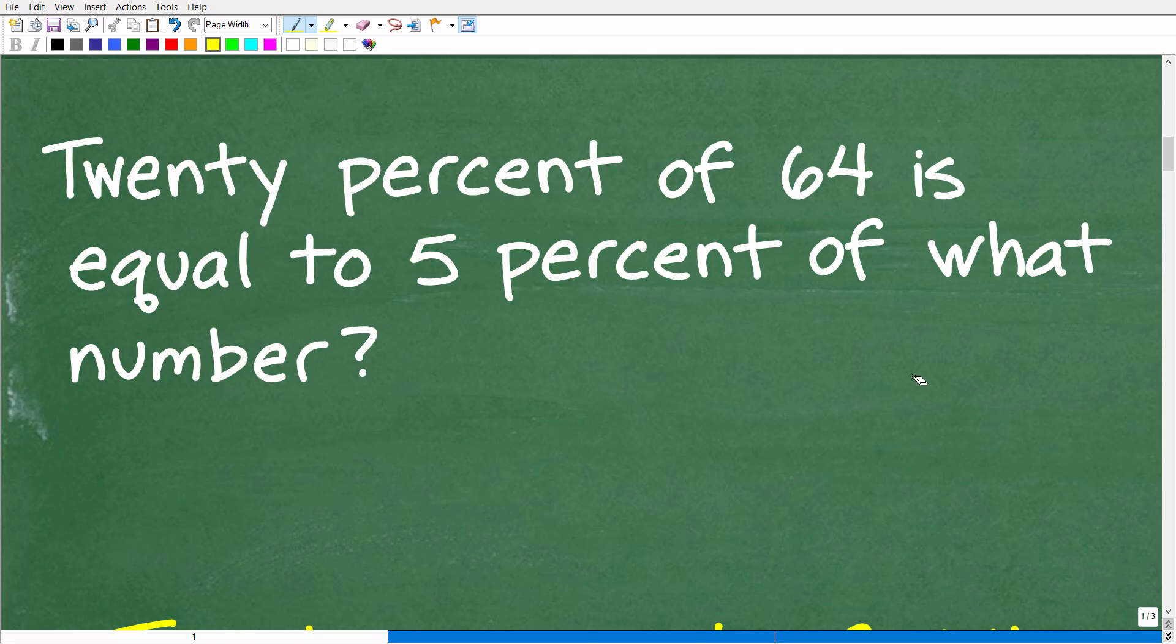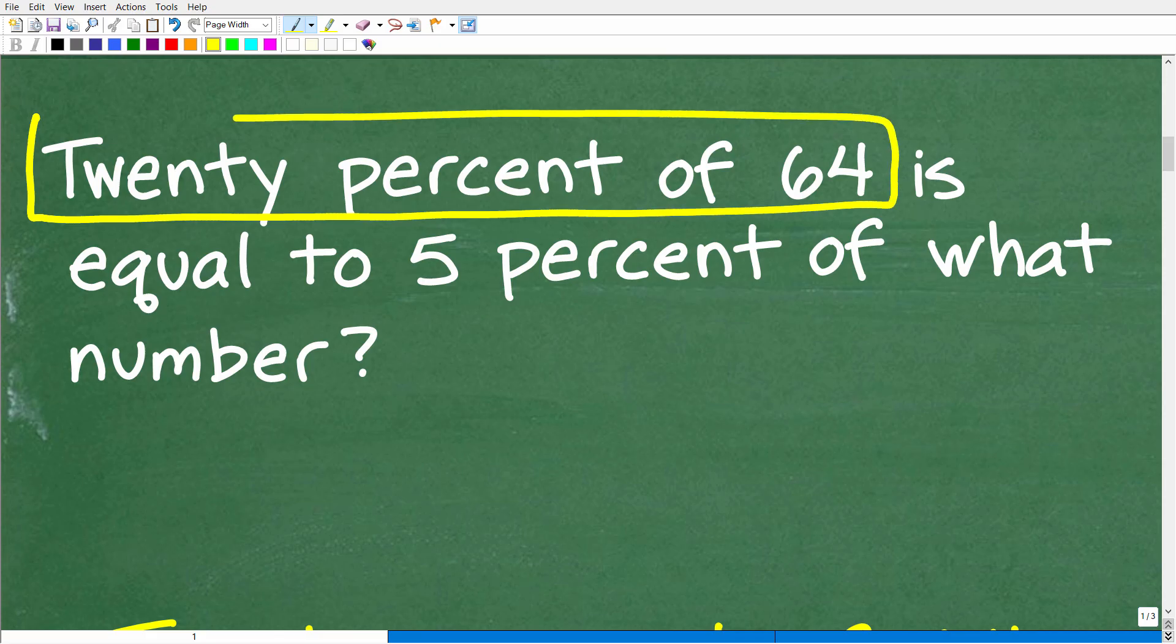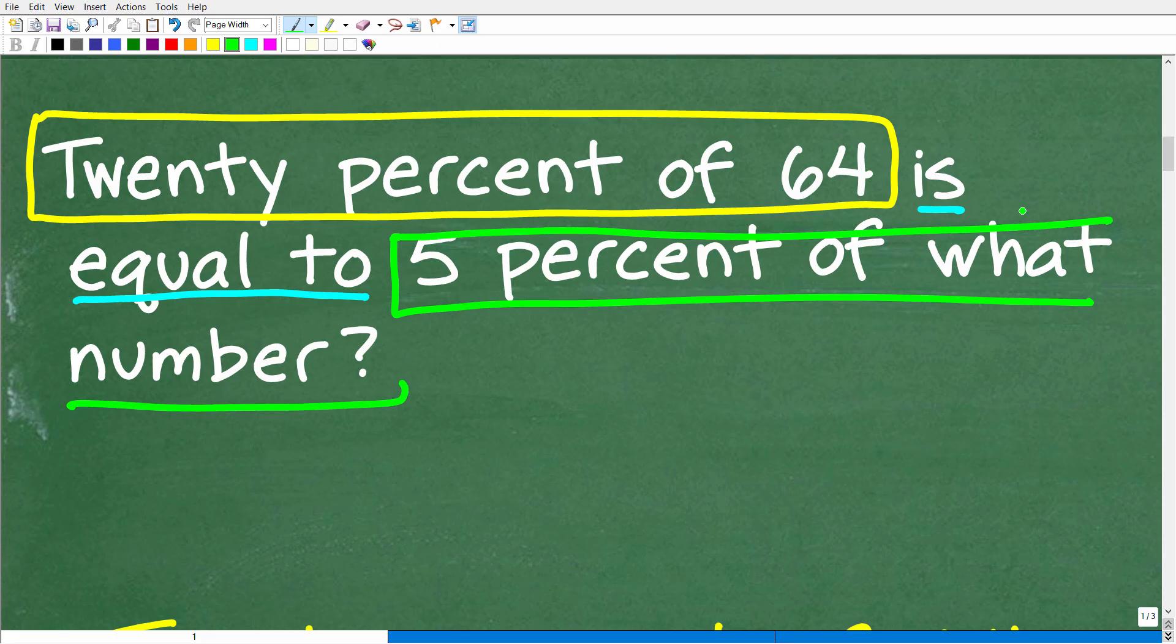When we're looking at this problem, really there's a few different parts to it. So first, we have 20% of 64. So that's one part. And then we have this statement here, is equal to, and then we have this part of the problem, 5% of what number? So it's like this problem has two little pieces to it, and in fact, it does. Now, if we look at this part, 20% of 64, we should be able to figure this out.